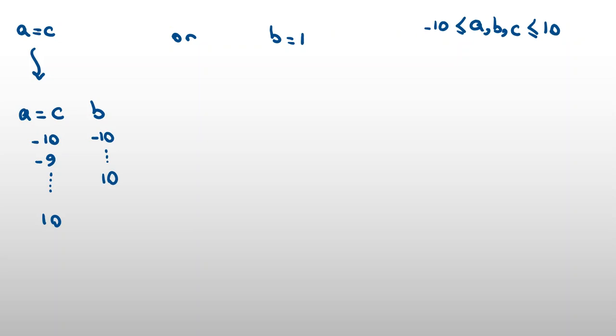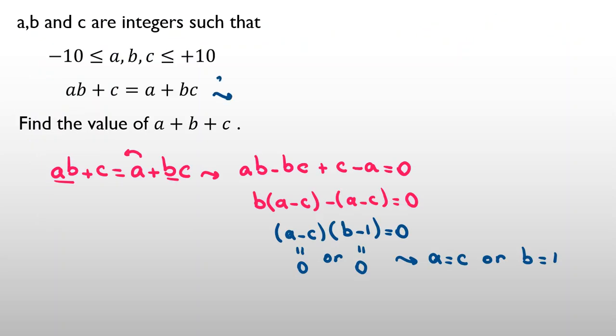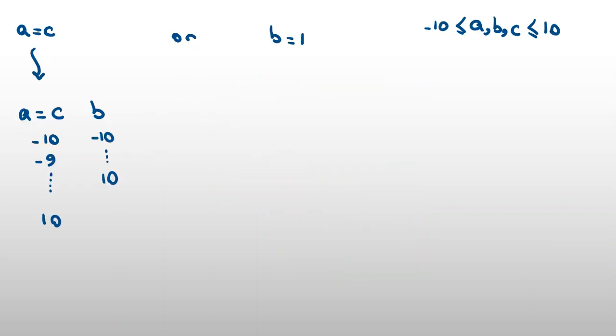And we can see here, if a equal to c, first of all a equals c equal to w. Then it will be wb plus w equal to w plus bw. And you see it is correct. So it can be any number here. So 21 for a and c, and 21 for b if I want to calculate the number of answers. The problem says, let me see. The problem says find a plus b plus c. Okay. So let me calculate instead of the numbers, a plus b plus c.